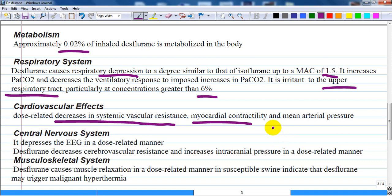Central nervous system side effects: the effects of desflurane are similar to those of isoflurane. It depresses the electroencephalography in a dose-related manner. It does not cause seizure activity, and desflurane decreases cerebral vascular resistance and increases intracranial pressure, which is not desired.